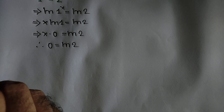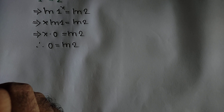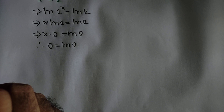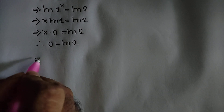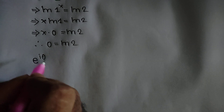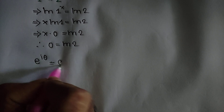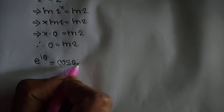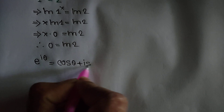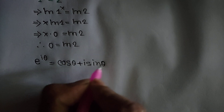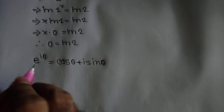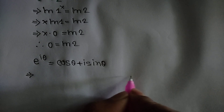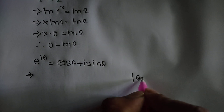Now let's try to find the complex solution of this equation. We know that e to the power i theta is equal to cos theta plus i sin theta. Substituting theta equal to 2 pi k, we can evaluate e to the power i times 2 pi k.